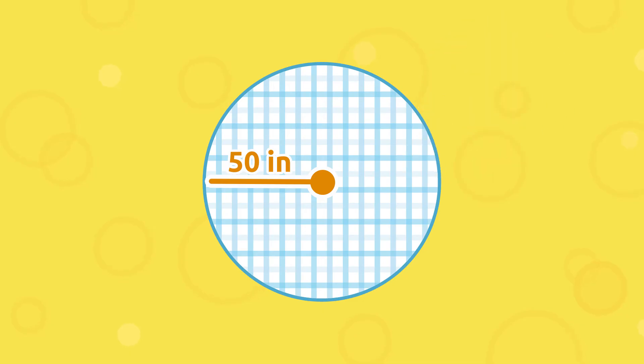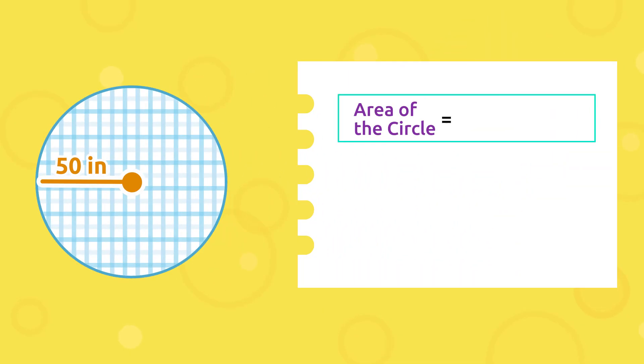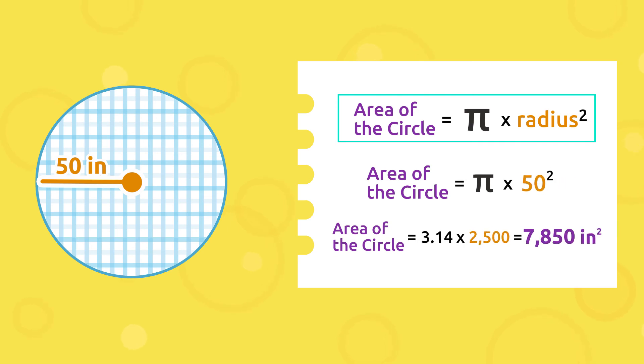To find out, we calculate the area of this round table. Remember: square the radius (multiply it by itself), then multiply the result by pi. Let's see: 50 squared equals 2,500, and 2,500 multiplied by 3.14 is 7,850.